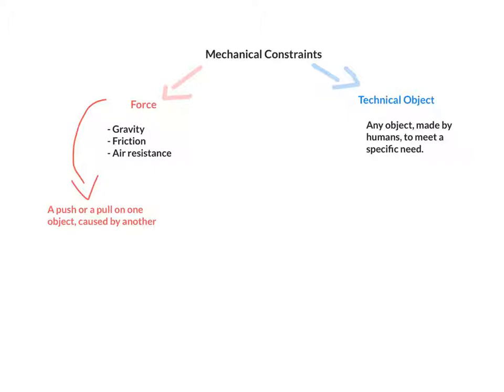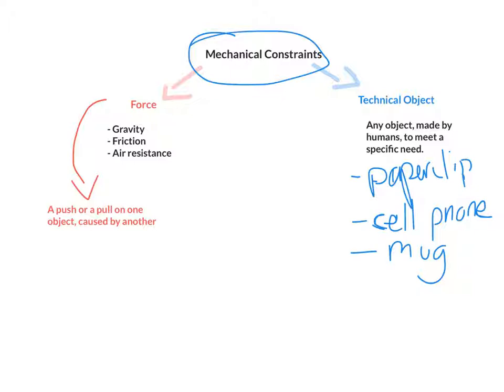So by this definition, there is a huge range of technical objects. So we can even consider things like a paperclip, things like a cell phone or even things like a mug can be considered a technical object because it's anything that is made by humans to meet a specific need.